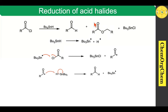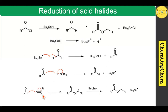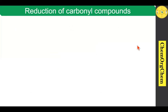This tributyltin radical readily abstracts the chlorine atom from acid chloride, which produces the corresponding acyl radical along with tributyltin chloride as a byproduct. This acyl radical readily abstracts a proton from tributyltin hydride, which produces the aldehyde product along with tributyltin radical. The acyl radical can also attack the aldehyde oxygen atom, then generate the corresponding carbon-centered radical, which takes a proton from tributyltin hydride to produce the ester product. Based on the R group, this mechanism can undergo a radical or ionic pathway.